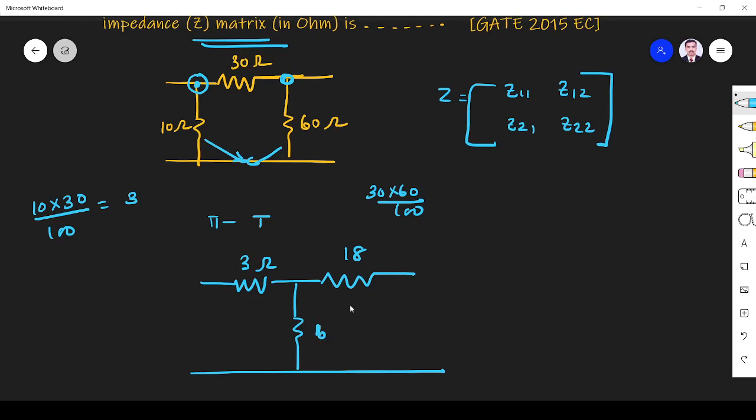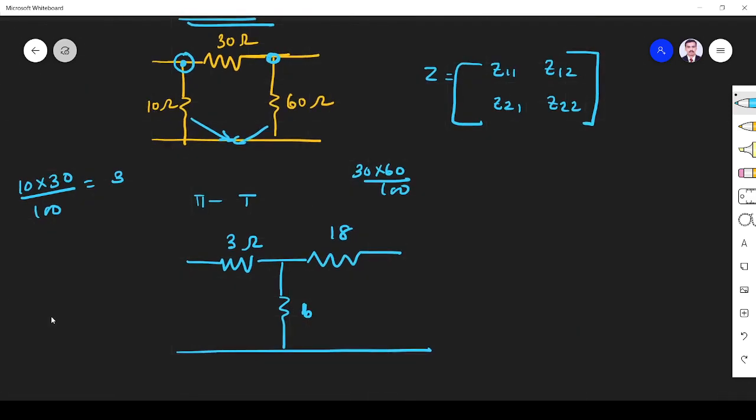So what about the Z matrix? Z11 is the summation of these two arms. I'll tell you the shortcut: 3 plus 6 equals 9. Z12 is the common arm, 6. Z21 is the common arm, 6. Z22 is the summation of these two: 18 plus 6 equals 24.